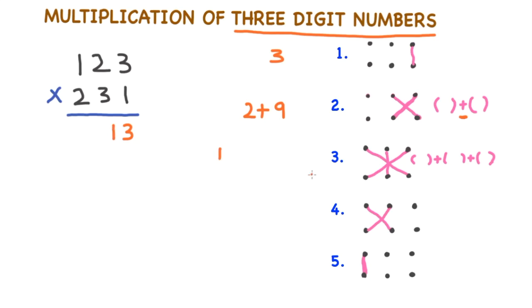Step 3: 1 into 1 is 1, plus 2 into 3 is 6, plus 2 into 3 is 6. 6 plus 6 is 12, 12 plus 1 is 13, 13 plus 1 is 14. I'll write 14 here.